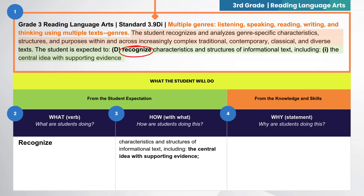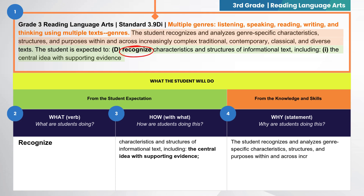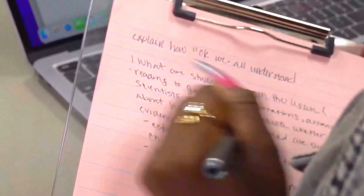Fourth, identify the why by referring back to the knowledge and skill statement and asking: why are students doing this? Here, the knowledge and skill statement indicates that in using the concepts mentioned, the student recognizes and analyzes genre-specific characteristics, structures, and purposes within and across increasingly complex, traditional, contemporary, classical, and diverse texts.